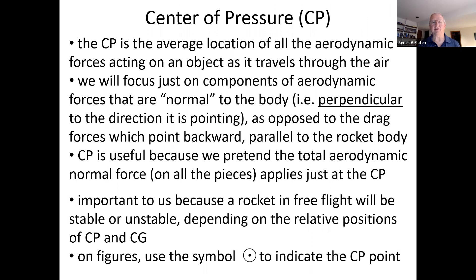Center of pressure, on the other hand, is the average location where the wind forces act on the rocket. If you think about a weather vane on top of a farmhouse, it's supposed to twist so that it points into the wind. Wind blowing on it will push on different parts of the weather vane. Typically, a weather vane will have fins on one end so that end is more susceptible to the wind, and that end has a tendency to shift downwind as the thing rotates about the pivot location.